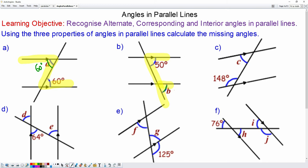For question c, you can see they are in a backward n shape, which means that they are interior. So the two angles have a sum of 180. So angle c will be 180 take away 148, which is 32 degrees.